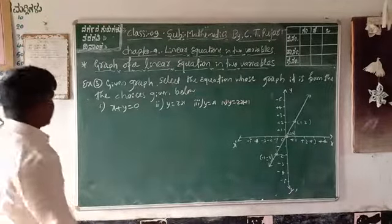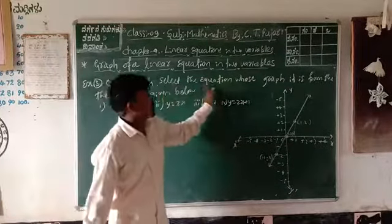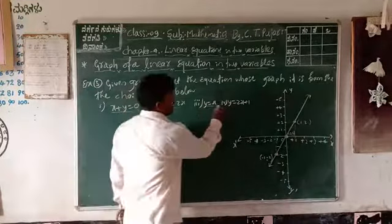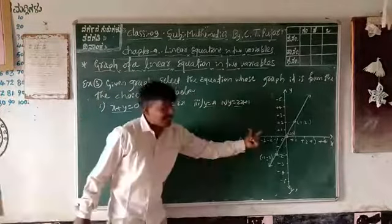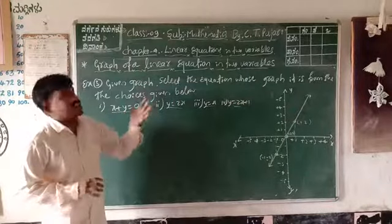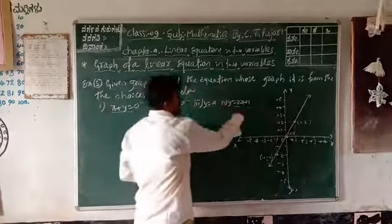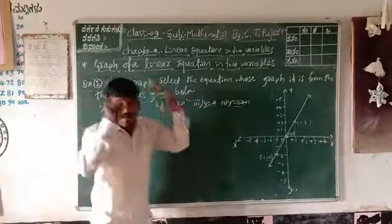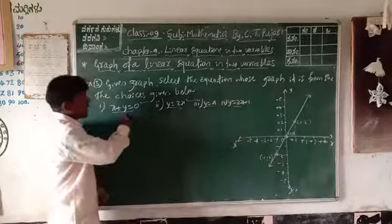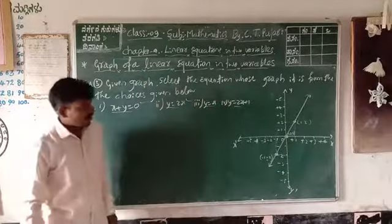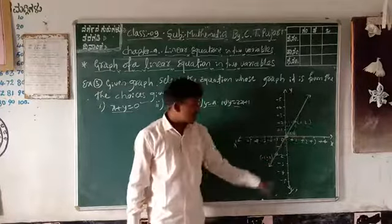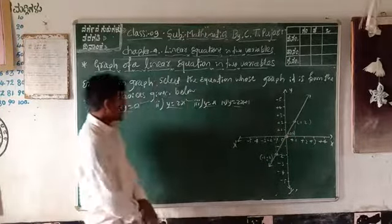Next, third example: A graph is already given — select which equation from the four given below matches this graph. The graph is already drawn; you need to find out which equation is correct for this graph. From the graph, there are three solutions visible: one solution is (1, 2), second solution is (0, 0), and third solution is (minus 1, minus 2).